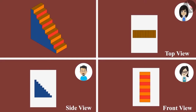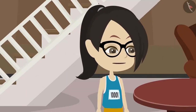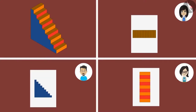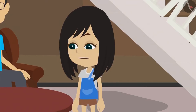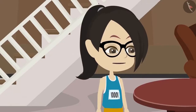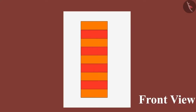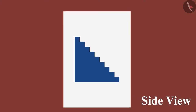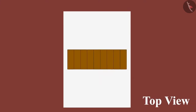I drew the staircase from the front. Uncle, which view would it be called? Vandana, this will be called the front view. That means when an object is seen from the front, its front view will be visible. Yes, and that's why Vandana's drawing appears different from our drawings. This is the front view of the staircase. This is the side view. And this is the top view.